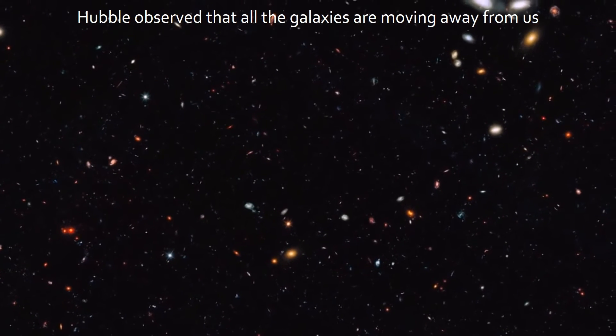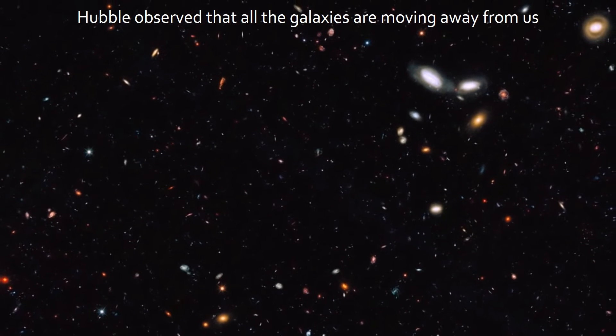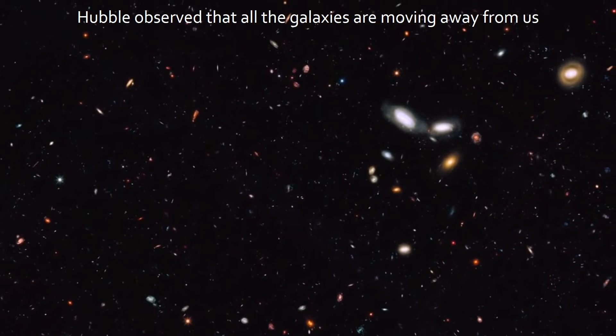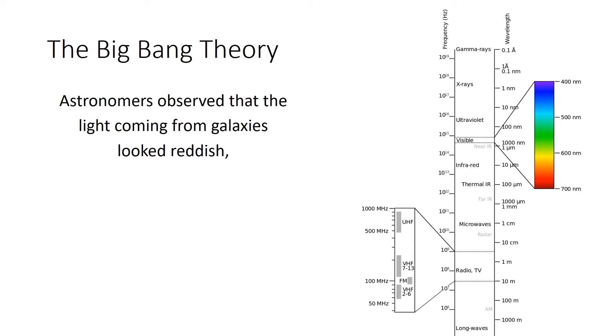In this photo right here, you can see lots and lots of galaxies. About every dot in there is a galaxy with billions of stars. But what Hubble realized is that they were all moving away from us. And how did he know that?